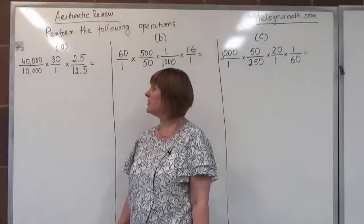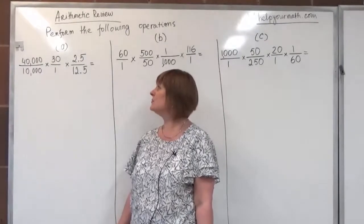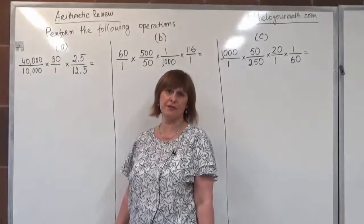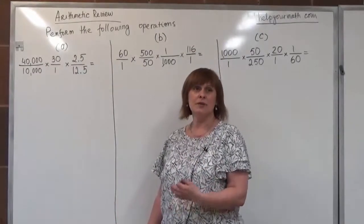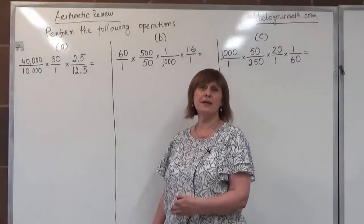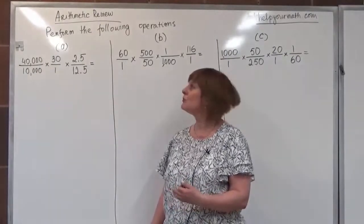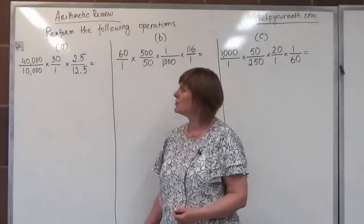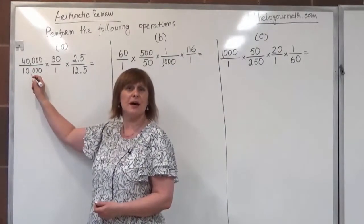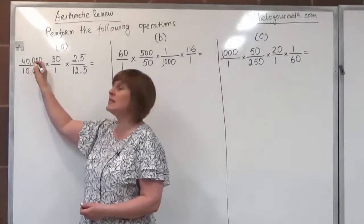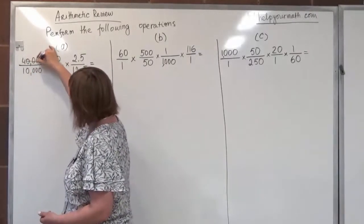We will divide 40,000 over 10,000, times 30 over 1, times 2.5, times 12.5. In this situation we always need to look first if we can clear the zeros. So let's look at what zeros we can reuse. We have 40,000 over 10,000 — we can cross out four zeros by reducing both fractions by 10,000.